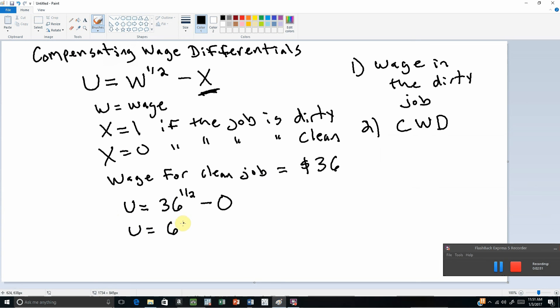So now let's find what's going on in the dirty job. In the dirty job, the utility will equal six. We're trying to solve for the wage—we don't know what that equals—and since this is a dirty job, X takes on a value of one. So what we're doing here is that in equilibrium...